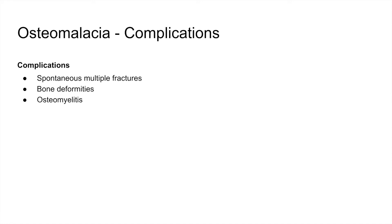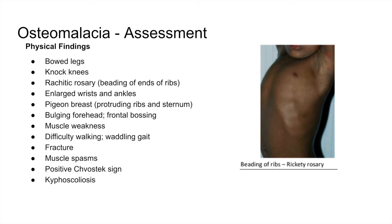Complications of osteomalacia include spontaneous multiple fractures, bone deformities, and osteomyelitis. Assessment findings include bowed legs, knock knees, rachitic rosary or beading on rib ends, enlarged wrists and ankles, pigeon breast with protruding ribs and sternum, bulging forehead or frontal bossing, muscle weakness due to low calcium, difficulty walking or waddling gait, muscle spasms, fractures, positive Chvostek sign, or kyphoscoliosis. The muscle spasms, Chvostek, and Trousseau signs are caused by hypocalcemia — the body tries to bring calcium back into the bone, leaving serum calcium low.